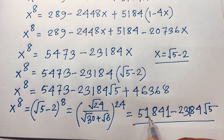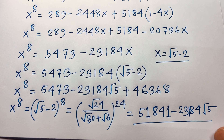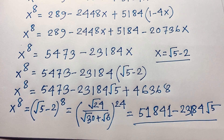So we find that this radical expression equals 51841 minus 23184√5. This is our final answer for this Math Olympiad question. Thank you all — if you enjoy this video please subscribe to my channel for other interesting videos. Goodbye, take care!